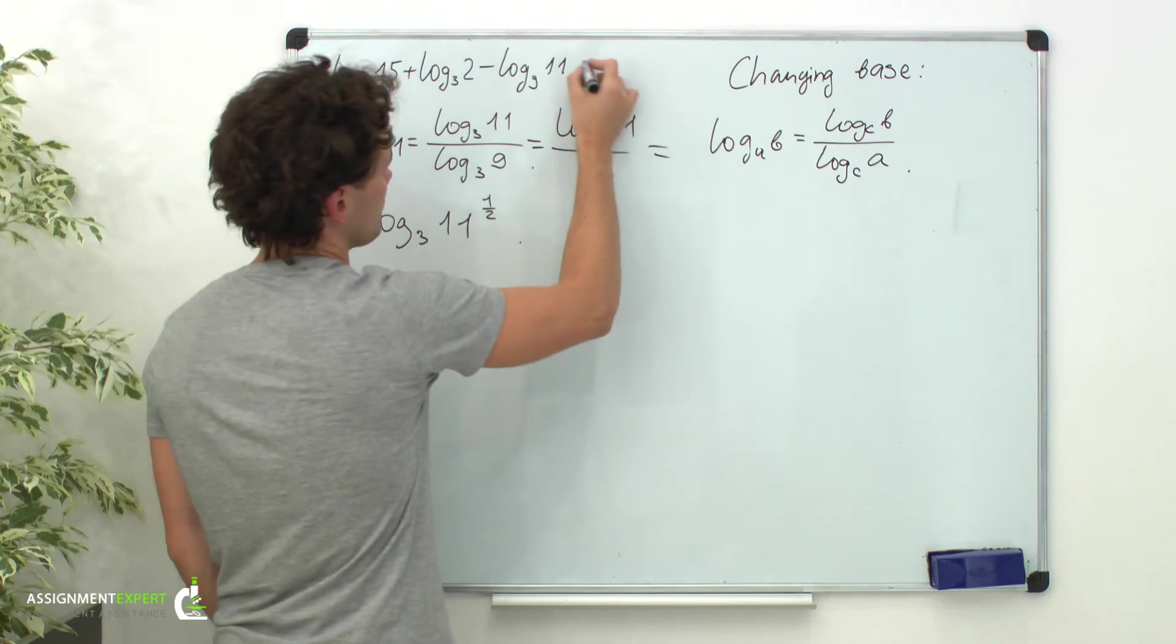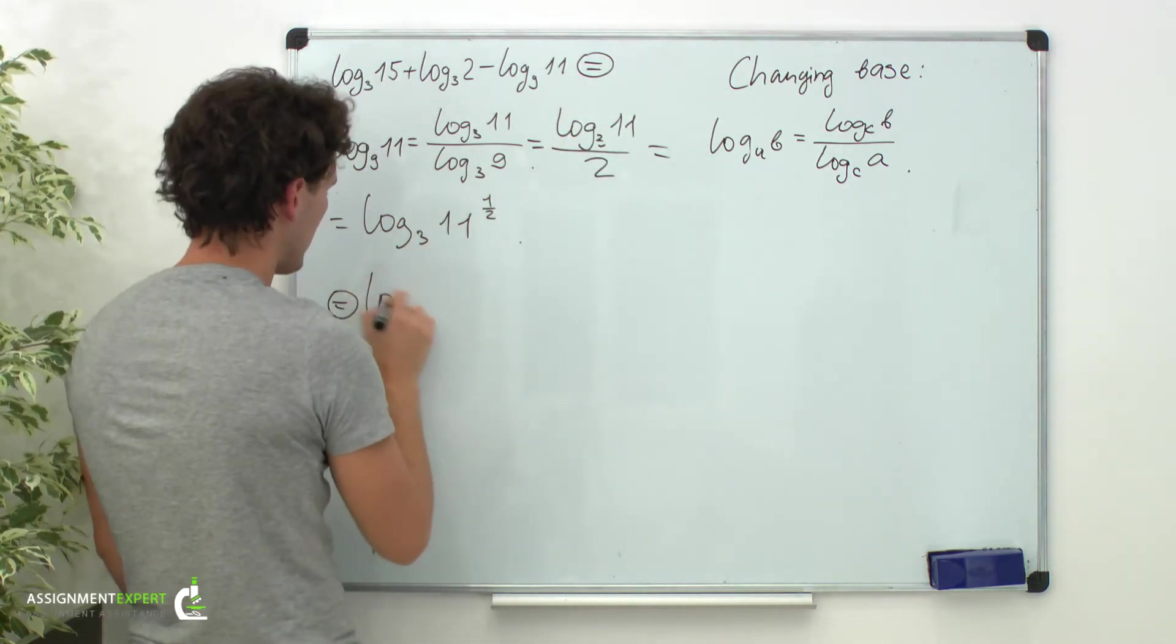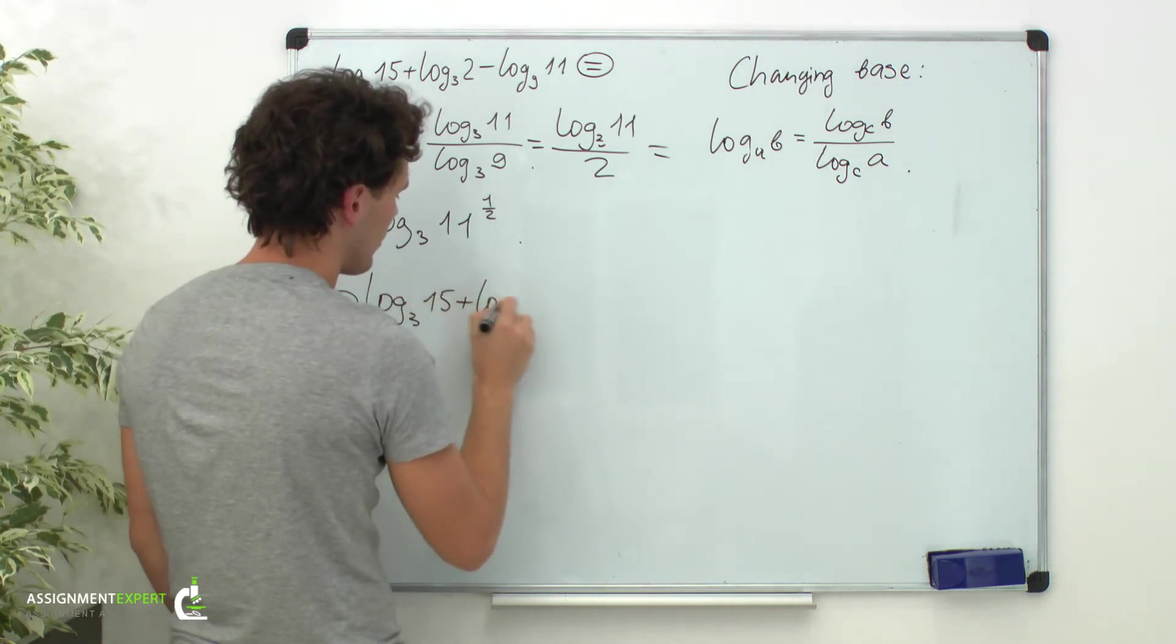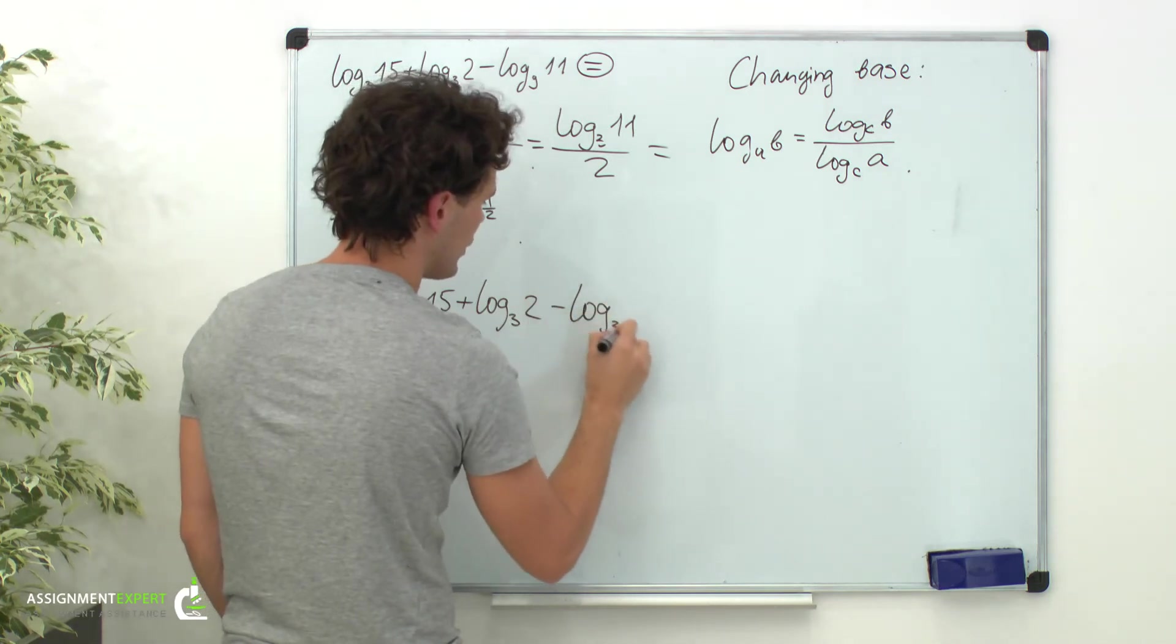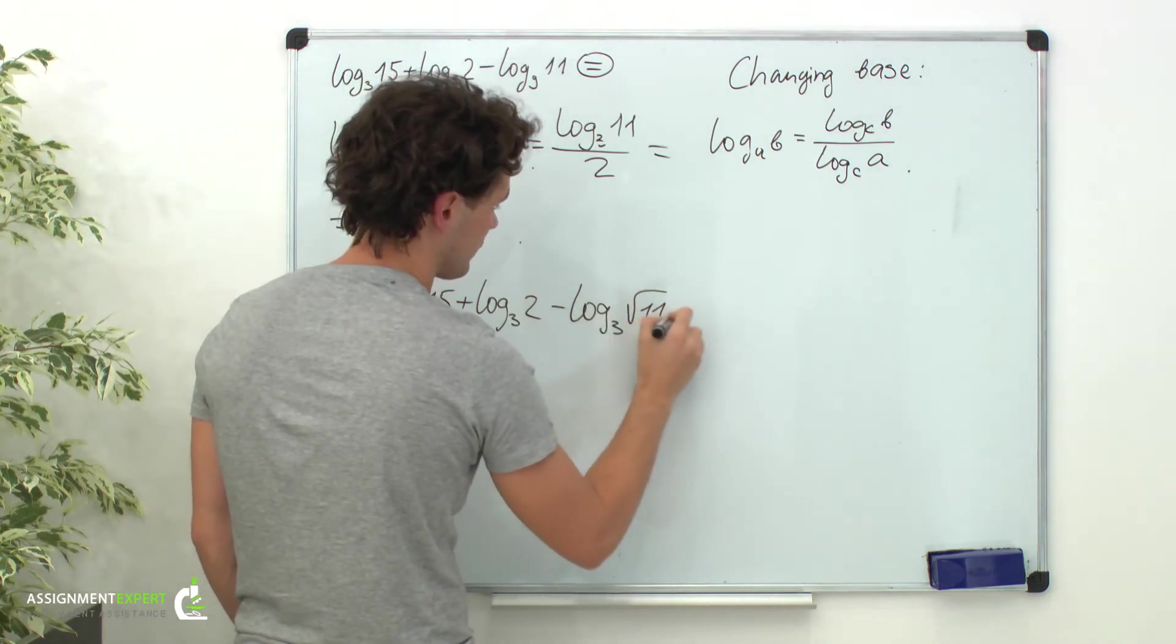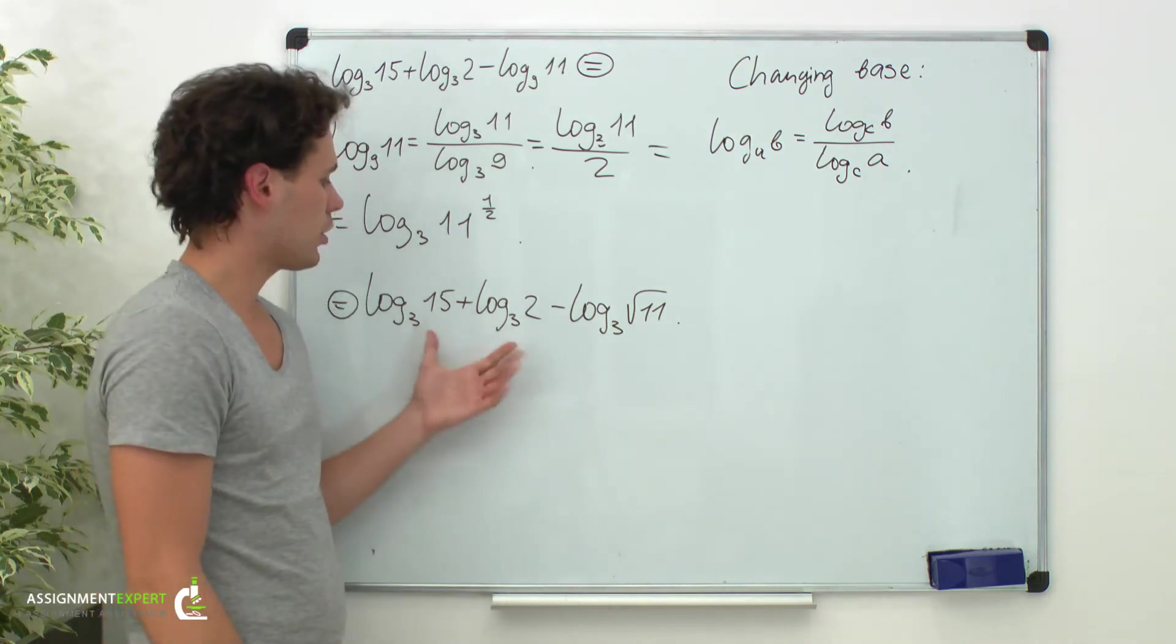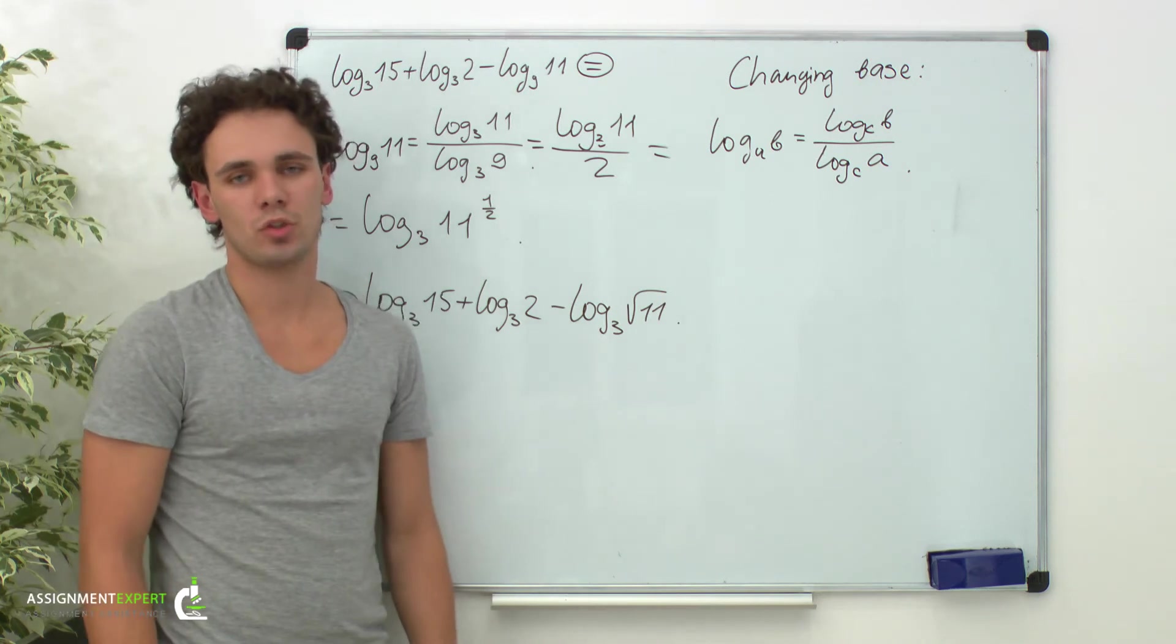Now back to our example. We have log base 3 of 15 plus log base 3 of 2 minus log base 3 of square root of 11. Now we have the algebraic sum of 3 logarithms with the same base. So we can apply the product and quotient rule.